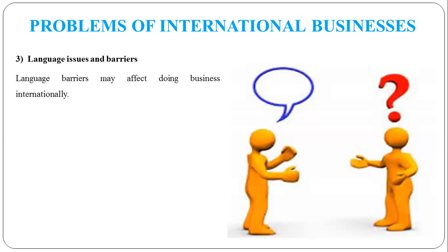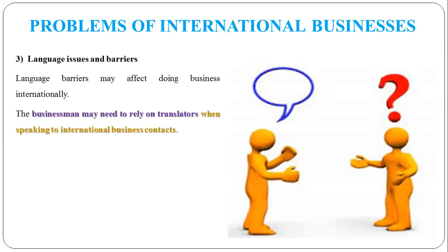The third problem is language issues and barriers. In different countries, there are different languages. English is a worldwide spoken language, but many businessmen don't have knowledge of English. So there is a problem with business dealings — such as an Indian businessman who has to deal with a Spanish businessman. They may use translators, but when they translate, there are chances that information and meaning can be lost in translation. What the Spanish businessman is trying to tell the translator may not be effectively conveyed to the Indian businessman, or vice versa. So language issues and barriers can cause further problems.